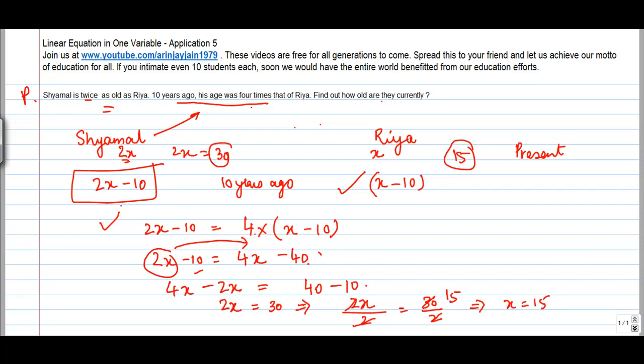Now let us see if this other part is also true. So ten years ago, what was the age of Shamal? It was 30 minus 10 or 20. And ten years ago the age of Rhea was 15 minus 10 is equal to 5. Now we see that Shamal's age is four times the age of Rhea and therefore, this mathematical equation holds true.